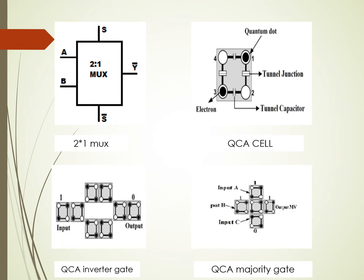How we define logic zero or logic one is based on the placement of electrons. In the figure, electrons are placed diagonally. If electrons are placed in the first and third position, it is logic zero. If electrons are placed in the second and fourth position, it is logic one. This is because due to Coulombic repulsion between two electrons, they move away, so the initial electrons are placed in a diagonal manner.